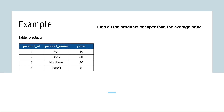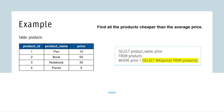Here is the query you would write. The query highlighted in yellow is the inner query that returns the average price of the product. The outer query uses the less-than operator to compare the price of each product with the average price returned by the inner query, filtering and returning all products cheaper than the average price.